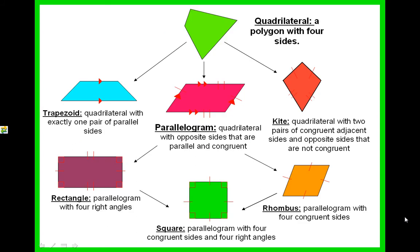A quadrilateral is a polygon with four sides. Every single shape on this page has four sides, so every single thing is a quadrilateral, which is why our map begins at the top with quadrilateral and then goes down.